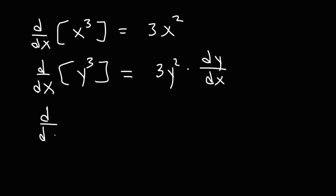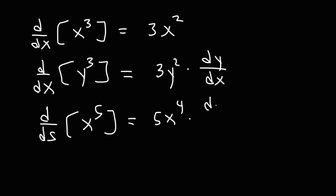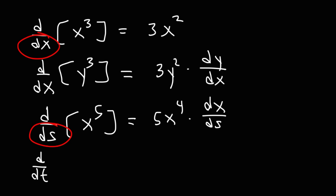Now, what if we want to differentiate x to the fifth power with respect to some variable s? This would be 5x to the fourth times dx/ds — that's the derivative of x with respect to s. When dealing with related rates problems, you'll see d/dt, so you're differentiating with respect to time. You could differentiate with respect to x, with respect to some other variable s, or with respect to t.